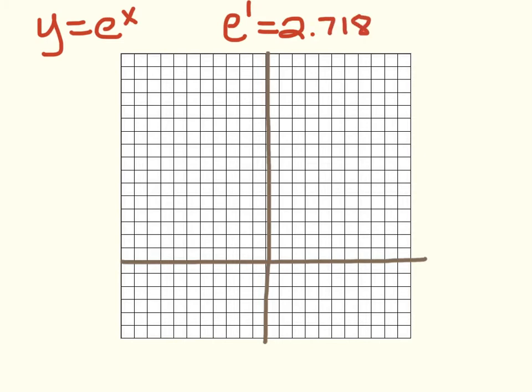And you should definitely have memorized that E to the 1 power is 2.718. So, we can definitely put when X is 1, Y is 2.718 right there. You should definitely know that E to the 0 power is 1. So, we should be able to put that point right there.